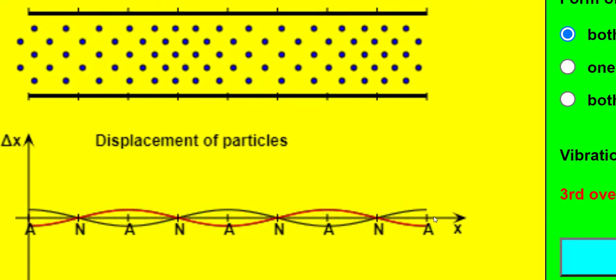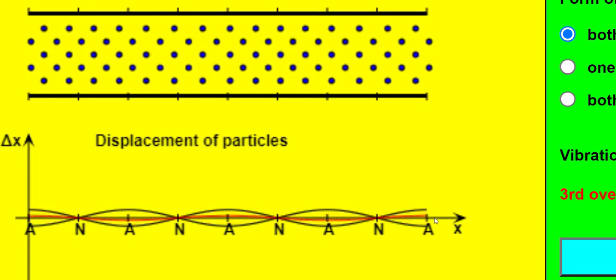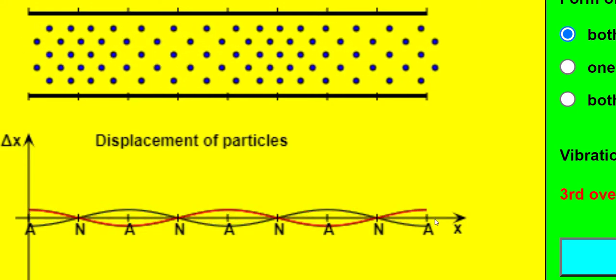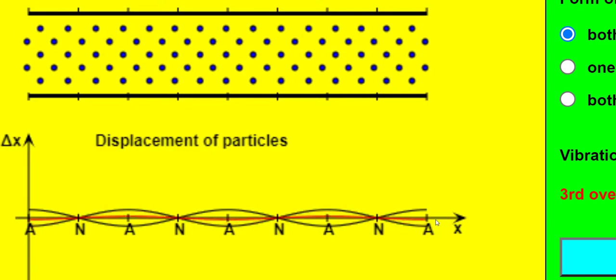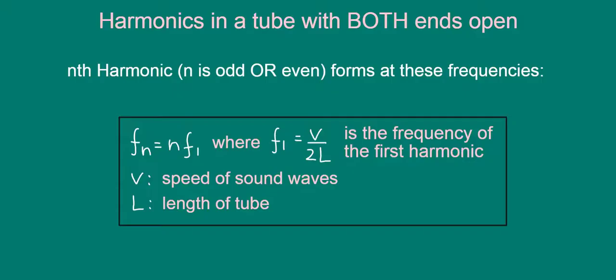Also note that in contrast to a closed tube, both odd and even harmonics are possible in an open tube. I'll leave it to you as an exercise to prove that the nth harmonic frequency, where n is any odd or even the whole number.